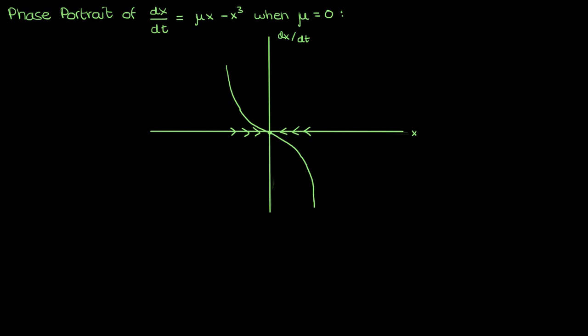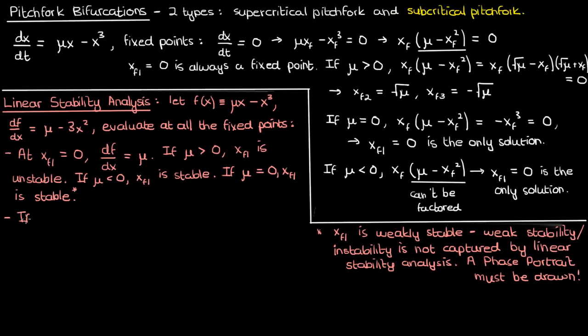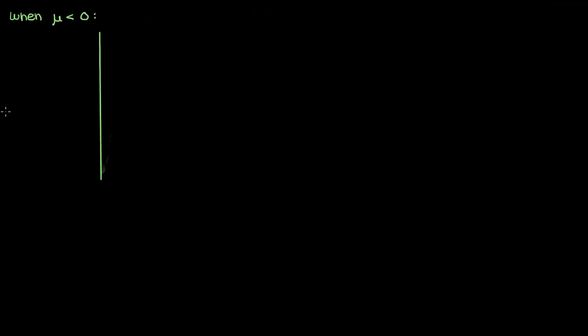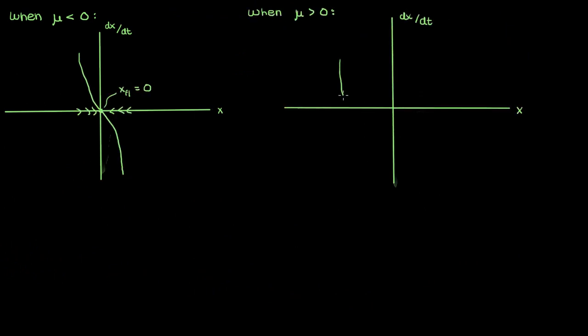Now let's look at the stability of the two fixed points created when μ is positive: +√μ and −√μ. When xf₂ = +√μ, df/dx evaluates to −2μ, and since μ must be positive for this fixed point to exist, df/dx is negative, so xf₂ is stable. The same applies to xf₃ = −√μ: df/dx is also −2μ, so xf₃ is also stable. For completeness I'll also draw the phase portrait when μ is negative and when μ is positive.